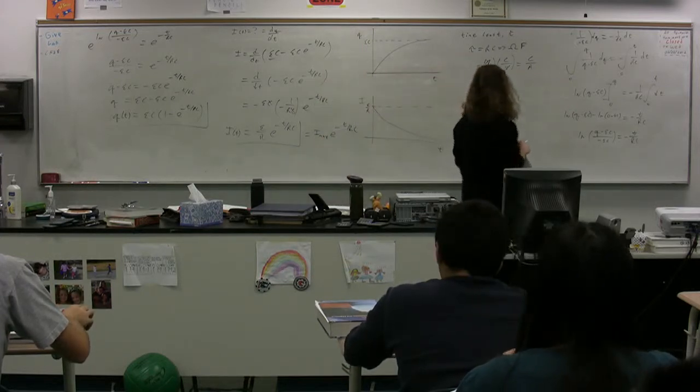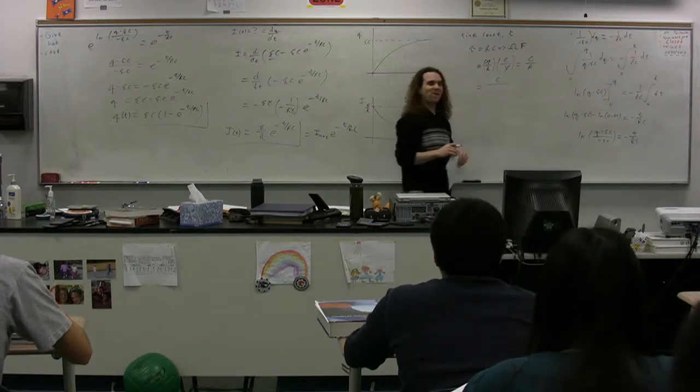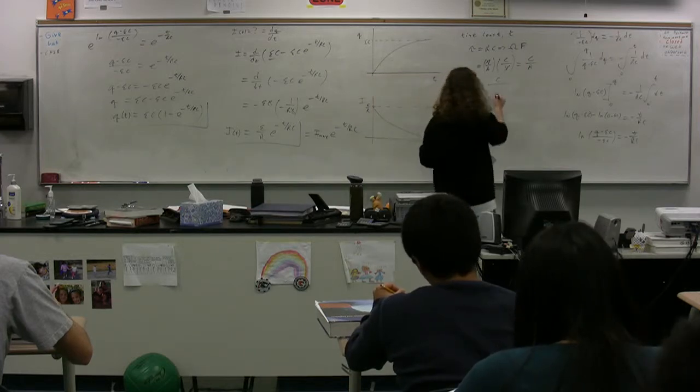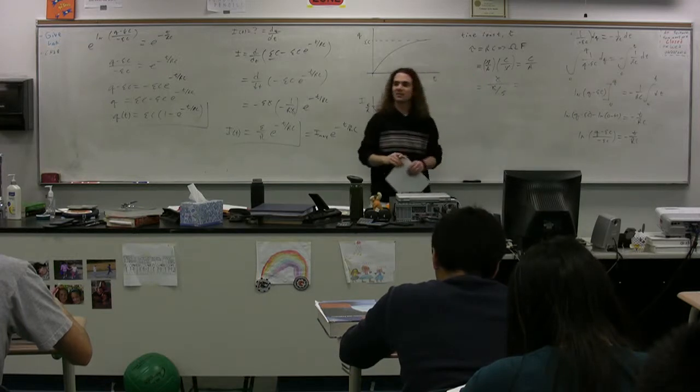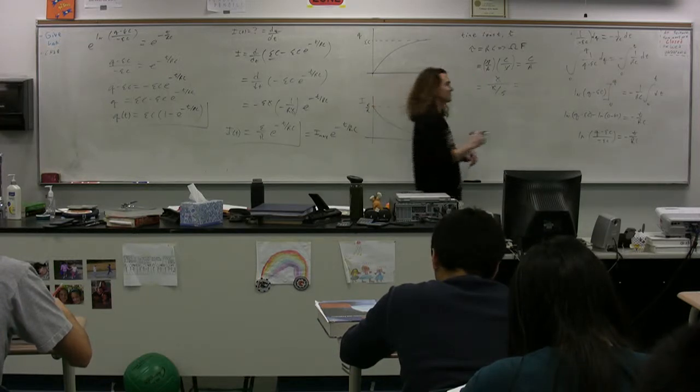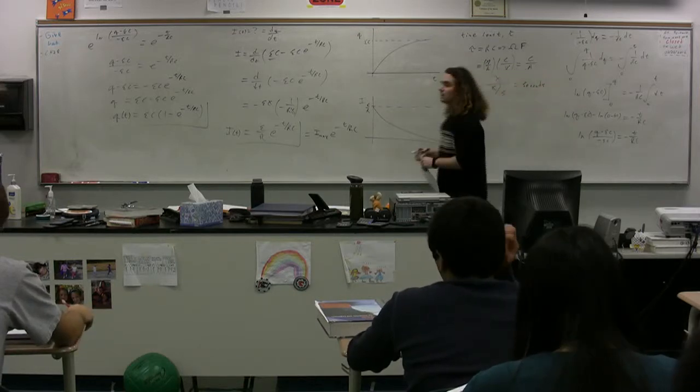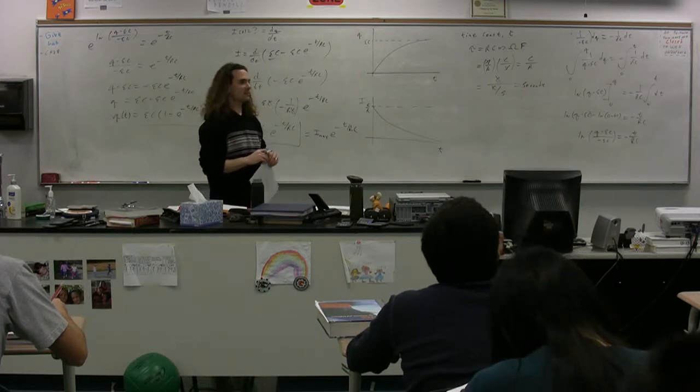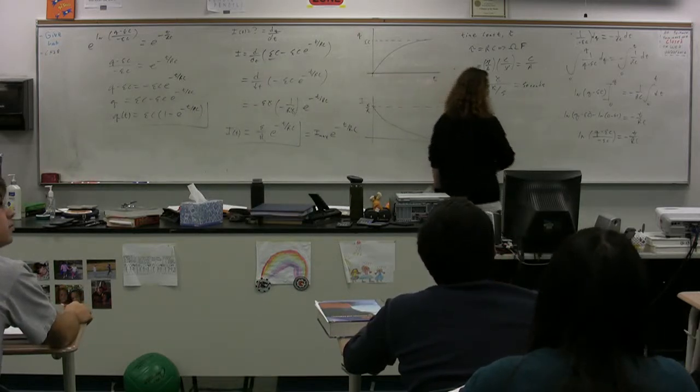Mike? What is an amp? Nick? Coulombs per second. Coulombs per second. Coulombs cancel out and we get what? Seconds. Seconds. There's a reason it's called a time constant because it has dimensions of seconds. Now, we need to talk about what it actually represents.